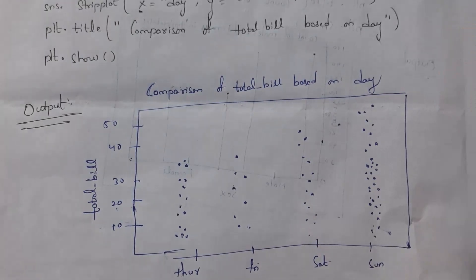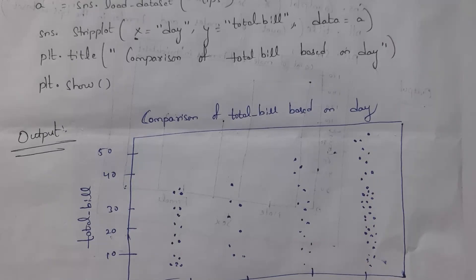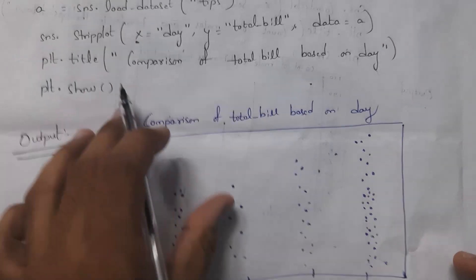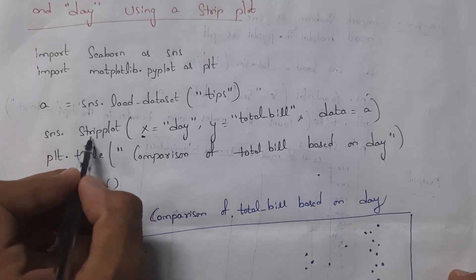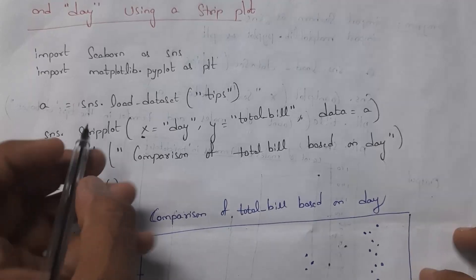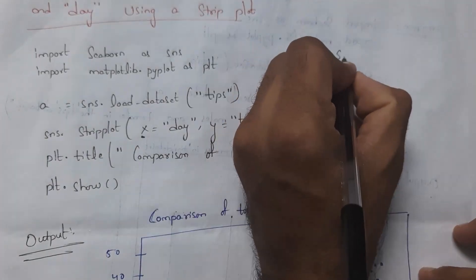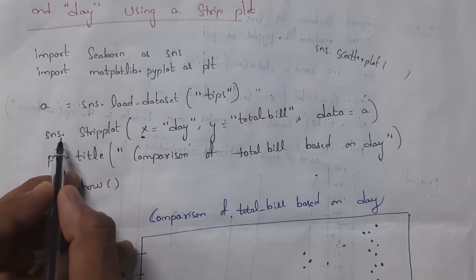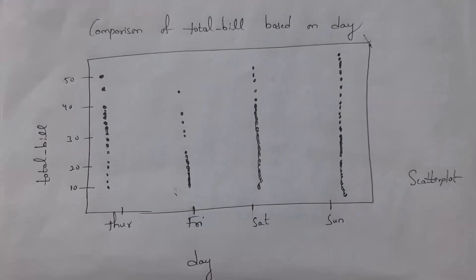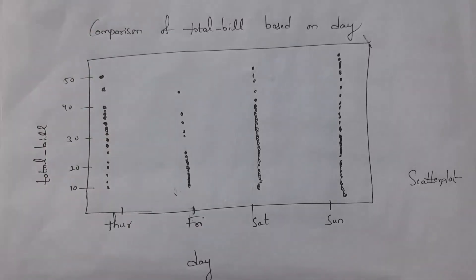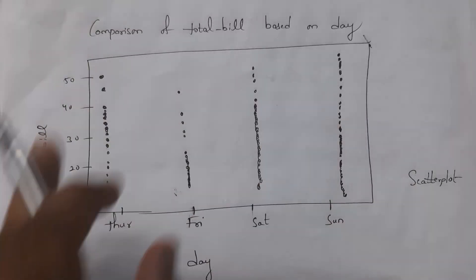You can also represent this same information in the form of a scatter plot. Just replace sns.stripplot with sns.scatterplot, keeping all other parameters the same. Whenever you run this program with sns.scatterplot, this is the output. The scatter plot will represent all points in a single line.